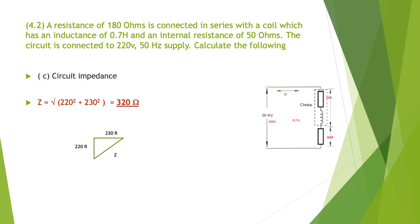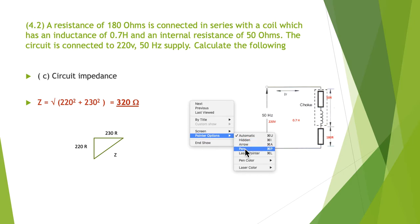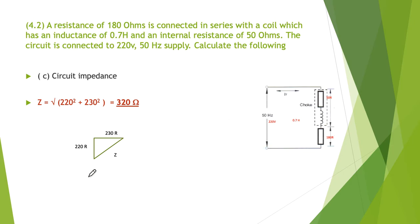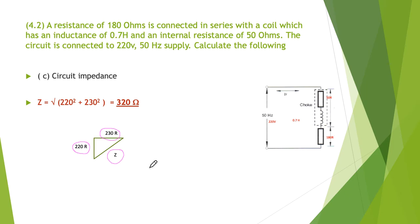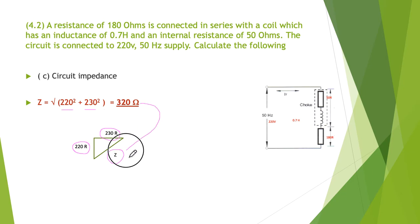Next, find the circuit impedance. This is a little more tricky because we're going to use Pythagoras. Going to our impedance triangle, we had a total resistance of 230 and an impedance of our choke of 220. So 220 squared plus 230 squared, take the square root of all of that, giving us a Z of 320 ohms.